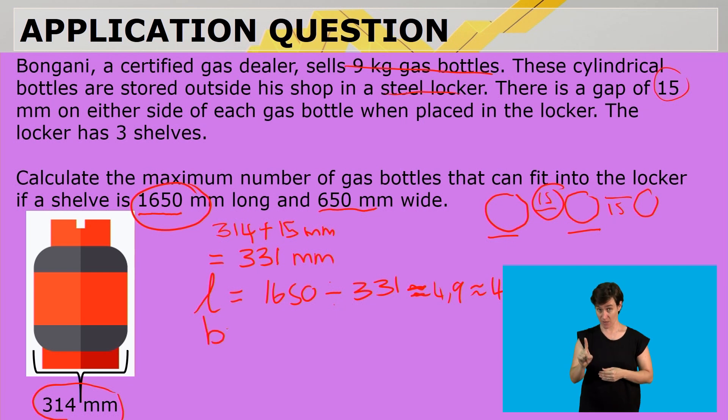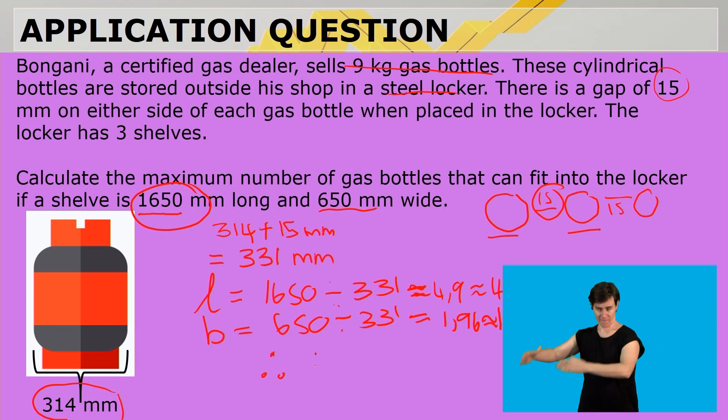So we have 4 in the length, and then in the width, we are going to say 650mm divided by 331. And I can tell you now the answer is going to be 1, because it's a bit more than half of it. It's 1.96, so we are going for 1.